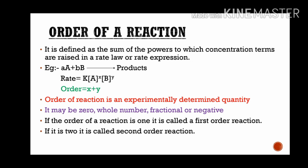What do x and y mean? They are experimentally determined quantities. The order of a reaction is defined as the sum of the powers to which the concentration terms are raised in the rate law or rate expression.